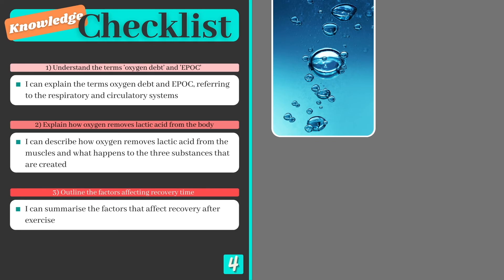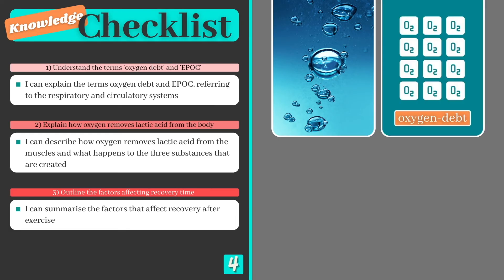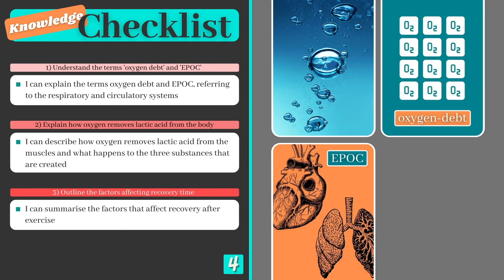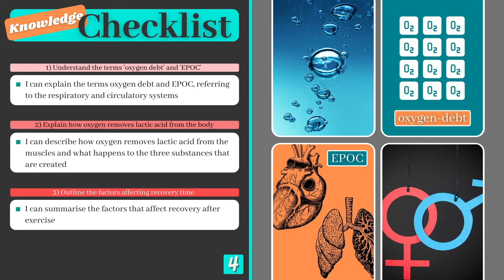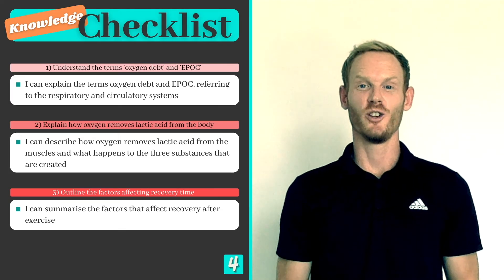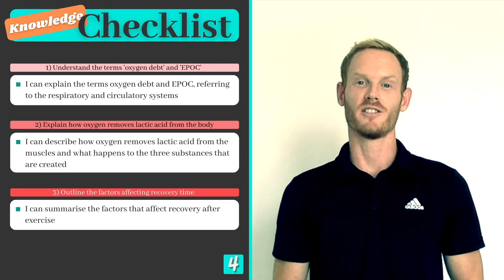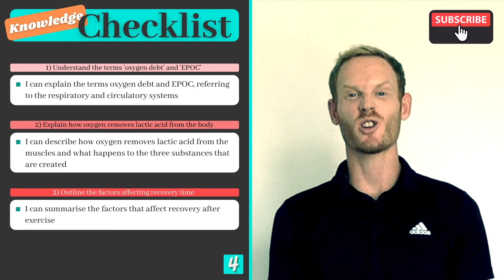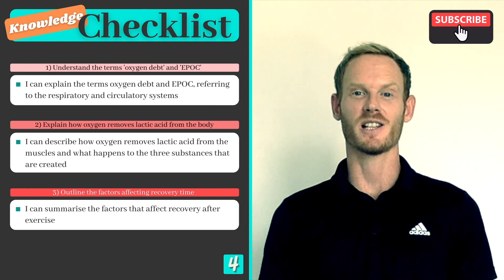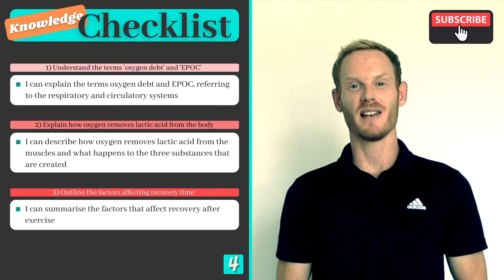To summarize, oxygen is needed to break down the lactic acid after exercise, and the amount of oxygen we need to pay back is known as oxygen debt. Our heart and breathing rate remains elevated after exercise to supply the necessary oxygen, and this is known as EPOC. Finally, there are a number of factors that influence recovery time from one individual to another. Well done, you've just covered everything you need to know on topic 4.2 recovery. Make sure you subscribe and turn on notifications so as not to miss the next one, and I hope you found this lesson useful.